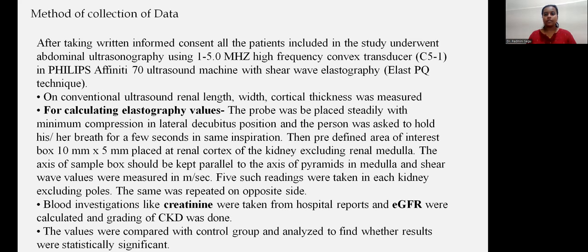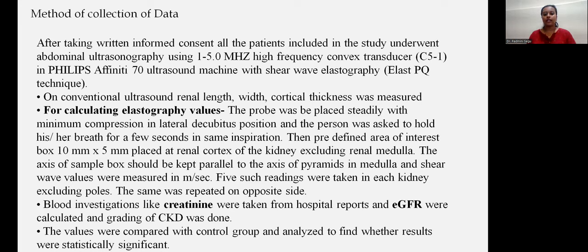After taking written informed consent, all patients underwent abdominal ultrasonography using a 1 to 5 megahertz high-frequency convex transducer C51 on a Philips Affinity 70 ultrasound machine with shear wave elastography technique. On conventional ultrasound, renal length and cortical thickness were measured. For calculating elastography values, the probe was placed with minimal compression in the lateral decubitus position and the patient was asked to hold their breath for a few seconds during inspiration. A predefined area of interest box of 10 x 5 mm was placed at the renal cortex excluding the renal medulla. Five readings were taken in each kidney excluding the poles, and the same was repeated on the opposite kidney. Blood investigations including creatinine were taken from hospital records, and eGFR and CKD grading were calculated. Values were compared with the control group to assess statistical significance.